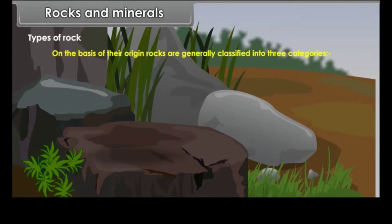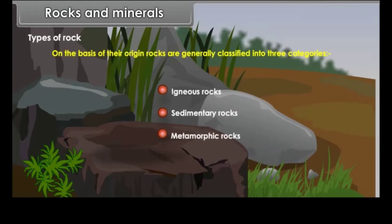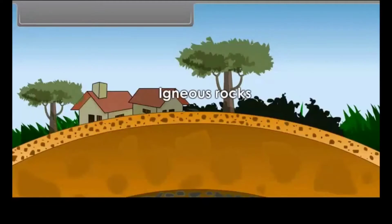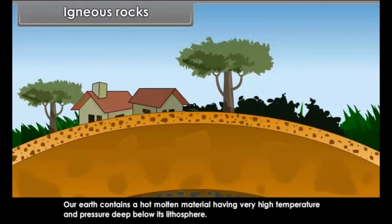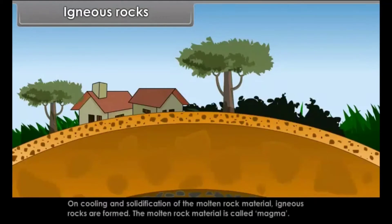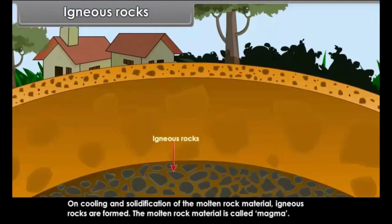Types of Rock. On the basis of their origin, rocks are generally classified into three categories: igneous rocks, sedimentary rocks, and metamorphic rocks. Our Earth contains a hot, molten material having very high temperature and pressure deep below its lithosphere. On cooling and solidification of the molten rock material, igneous rocks are formed.